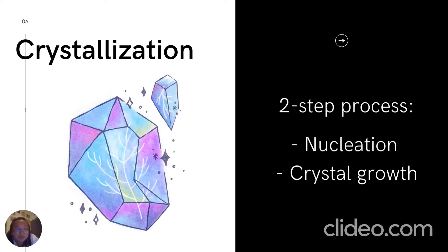Crystallization from solution can be thought of as a two-step process. The first step is the phase separation, or birth, of a new crystal. The second step is the growth of these crystals to a larger size. These two processes are known as nucleation and crystal growth, respectively. In order for a crystal to grow, we need a supersaturated solution. A supersaturated solution is not at equilibrium, so in order to relieve the supersaturation and move towards equilibrium, the solution crystallizes.